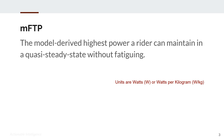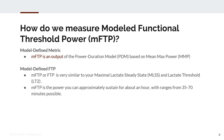MFTP is the model-derived highest power a rider can maintain in a quasi-steady state without fatiguing. Units are typically in watts or watts per kilogram. We measure MFTP by utilization of the Power Duration model, and MFTP is a simple output of that model.